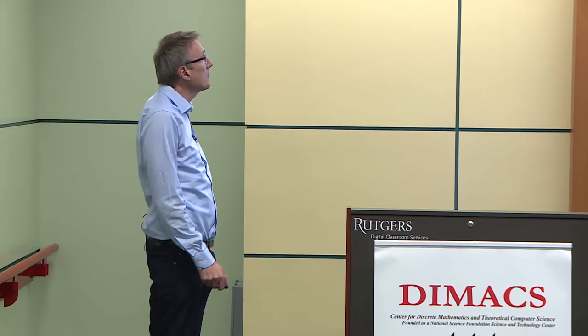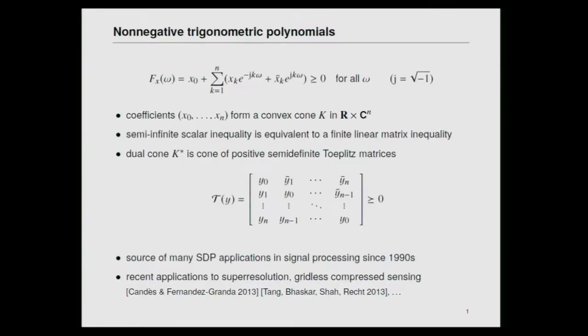It's a very classical sum of squares theorem. This semi-infinite scalar inequality can be formulated as a finite linear matrix inequality and handled using SDP methods. The dual of this cone is the cone of positive semi-definite Toeplitz matrices — positive semi-definite Toeplitz matrices is the dual cone of the cone of non-negative polynomials. This fact was the source of many applications of semi-definite programming in signal processing in the 1990s.